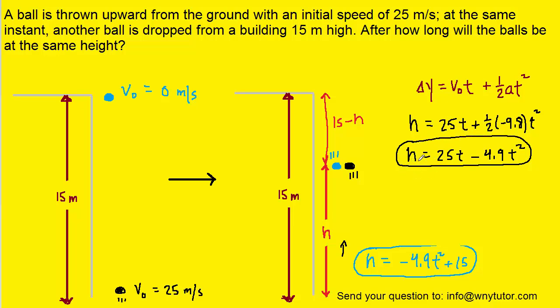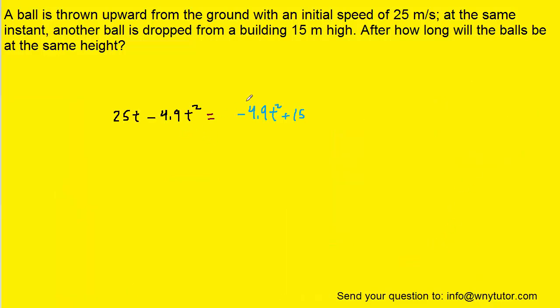Now, of course, because h is equal to this quantity here but it's also equal to this quantity here, we can set those two quantities equal to each other. Remember, our goal is to figure out how long it will take for the balls to be at the same height, so we're trying to solve for the time t.